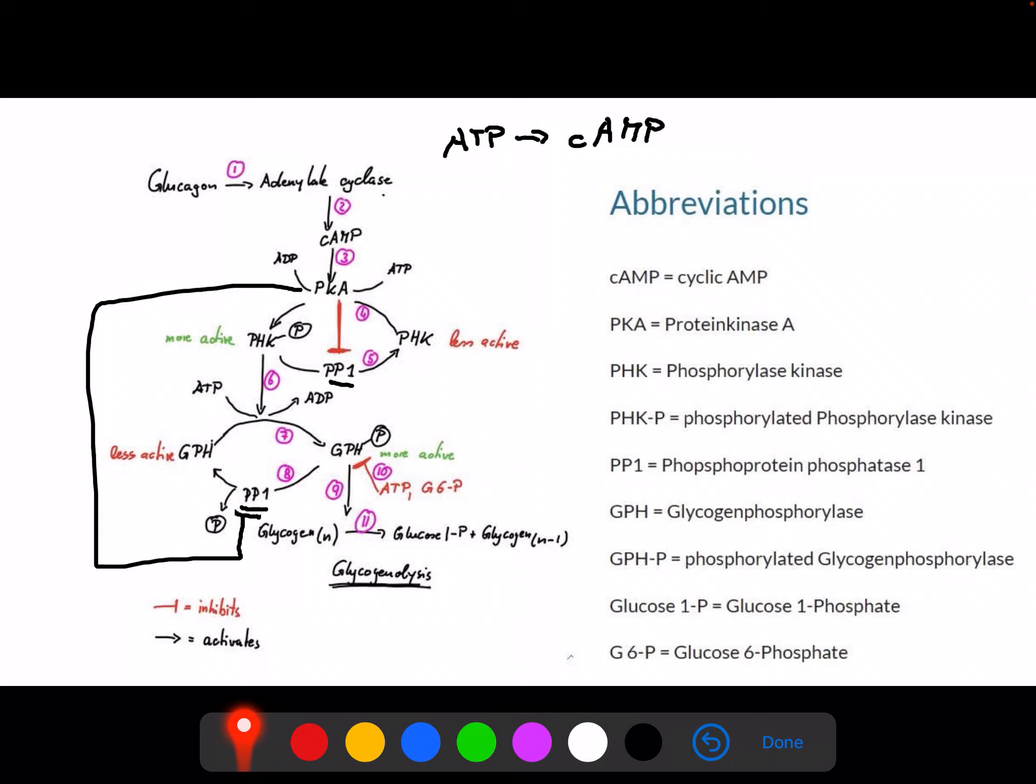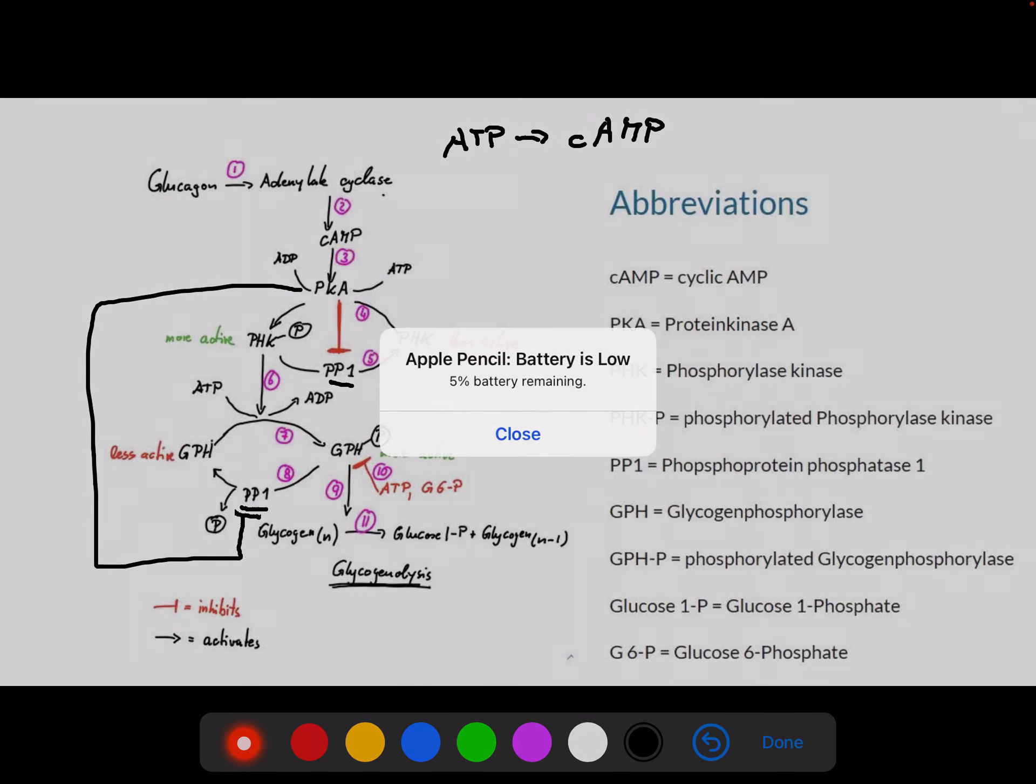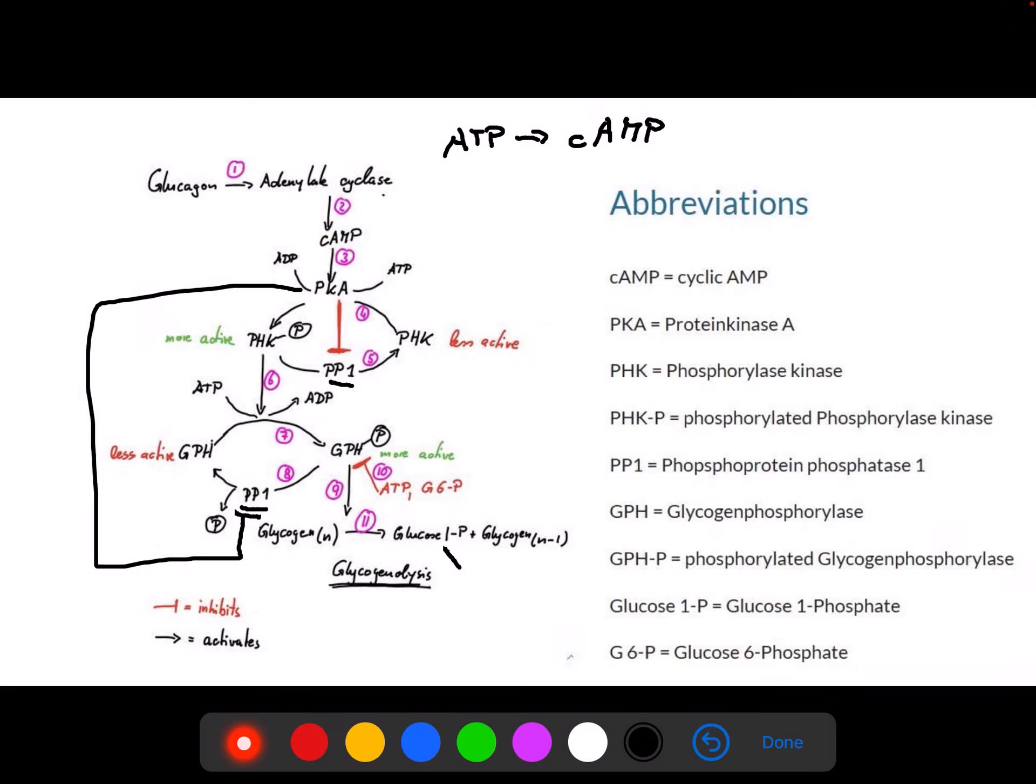In the liver itself, we would convert this glucose 1-phosphate into glucose 6-phosphate, and we would export the glucose into the bloodstream if we are in the hunger state, if there is not enough glucose in the bloodstream. So I hope this makes sense and thank you very much for watching!